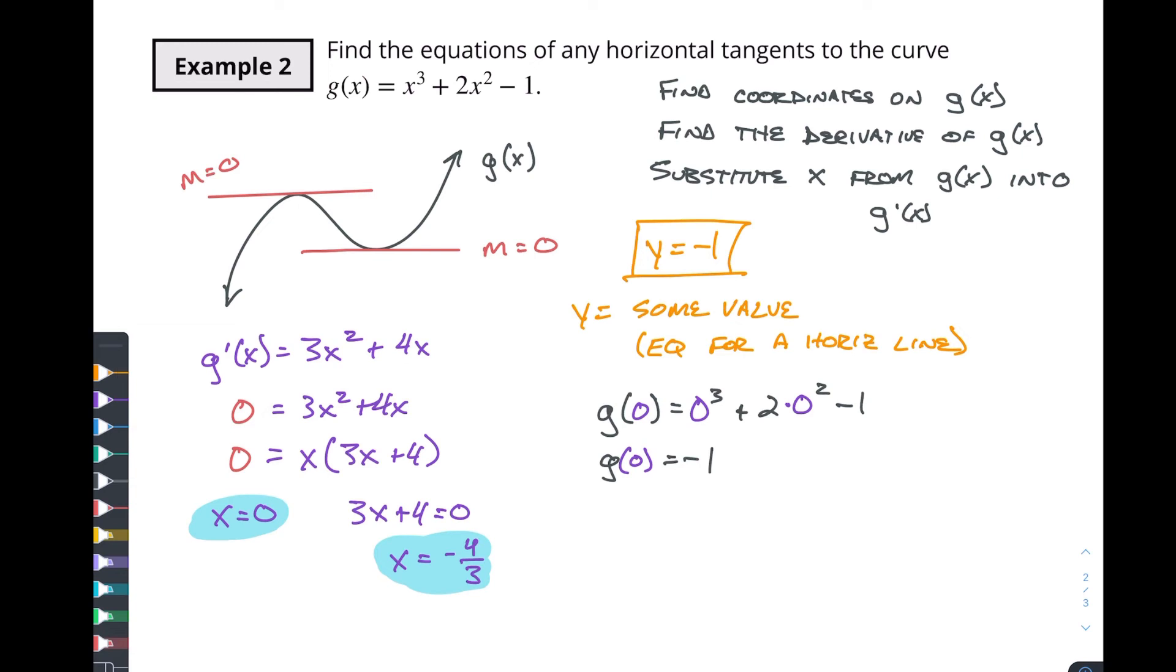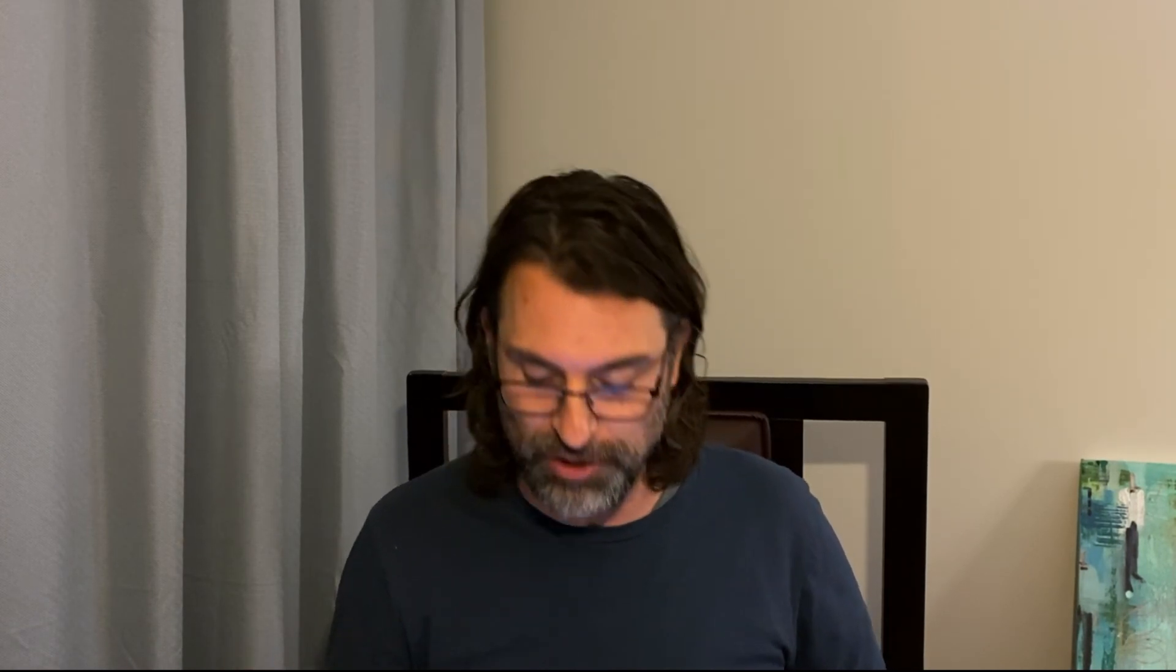And the other one, we have to put in negative four thirds into this function. g of negative four thirds is equal to negative four thirds cubed plus two times negative four thirds squared minus one. Now with an IB question, they're not going to ask you to do all this work by hand. The point is not for you to just do computations. So a question like this, you would probably have a calculator and we're going to use a calculator because you probably don't want to sit here and watch me work out fractions. And I'm going to move this out of the way a little bit so that way we can find that second value.